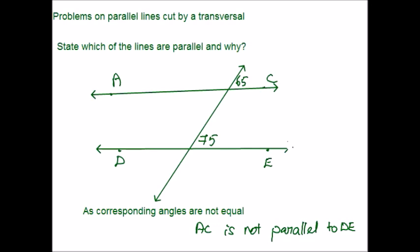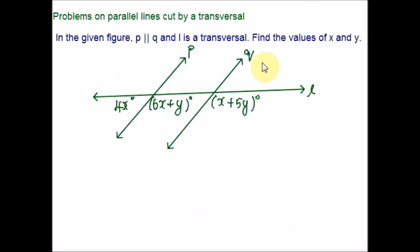But notice that these two angles are not equal — one is 65 and one is 75. So you can say that line AC is not parallel to DE. So far we discussed two types of examples: one is reasoning and stating, and the other is identifying the missing angles. Now let me take one example where you frame two equations and solve for unknown variables.